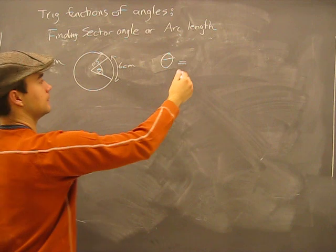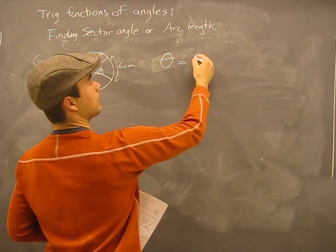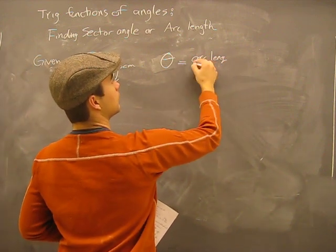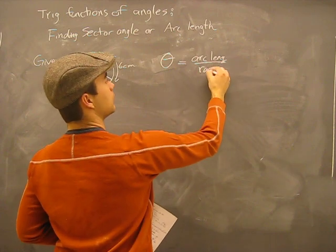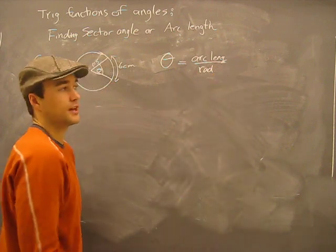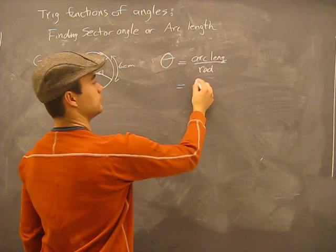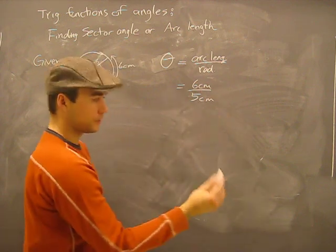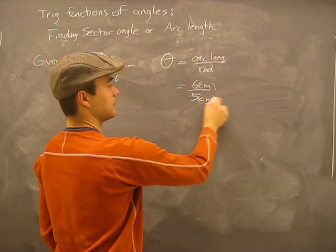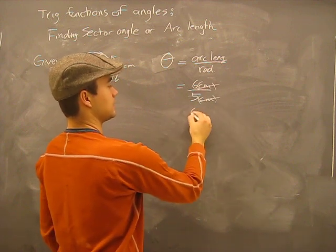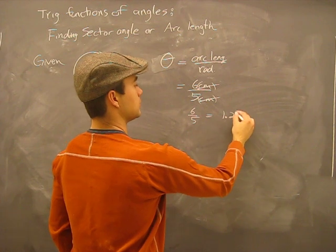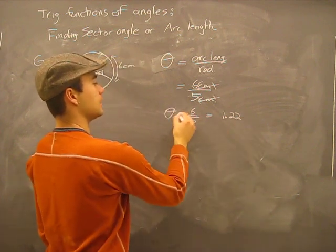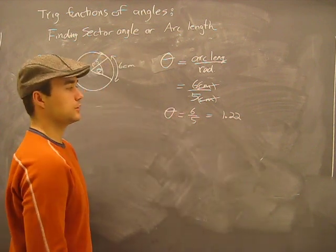Angle theta is going to be arc over radius. 6 cm over 5 cm, the centimeters cancel out, you have 6 over 5, which is 1.22.